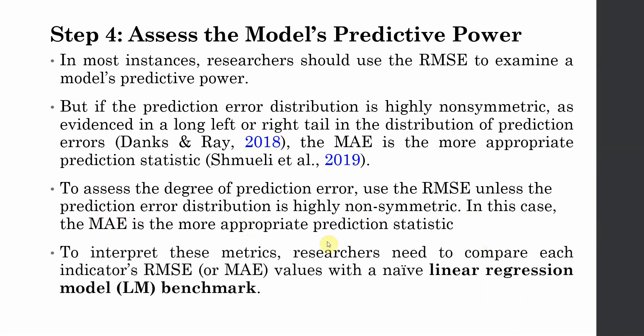In SmartPLS, go to Calculate > PLS Predict. The number of folds is 10 and the number of repetitions is 10 by default — keep these as default and start. You won't get graphical output directly, so go to the Report. For all the endogenous variables — POS, OC, and others — before interpreting results, go to the PLS SEM Error Histogram, which shows the manifest variable indicators and their histograms.